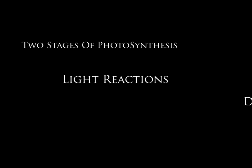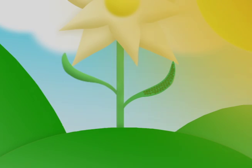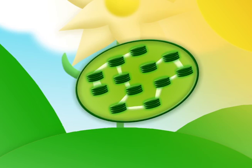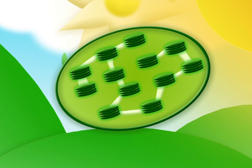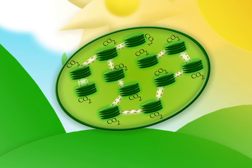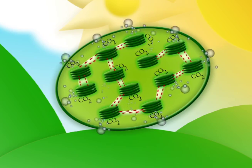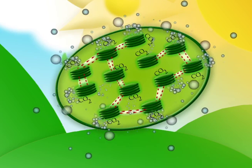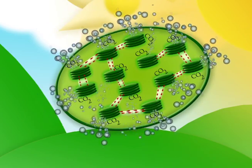There are two stages of photosynthesis: light reactions and dark reactions. In light reactions, the sun's energy that was absorbed by the chlorophyll earlier is now absorbed into the grana and converted into chemical energy. Oxygen is also created and released from the leaf during this process.